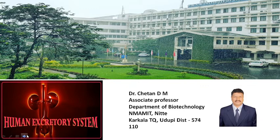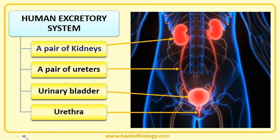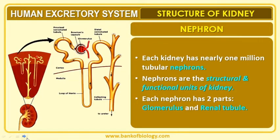Let us discuss the first topic: the human excretory system. I am going to discuss the role of the kidney in the formation of urine. The human excretory system consists of a pair of kidneys, ureters, urinary bladder, and urethra. In your syllabus, they are mainly concentrated on kidneys. The structure of the kidneys consists of nearly 1 million nephrons — the unit of kidney is referred to as a nephron.